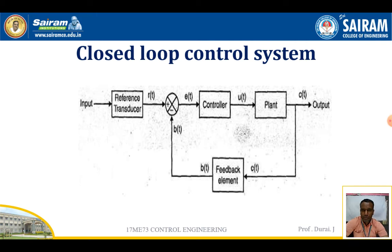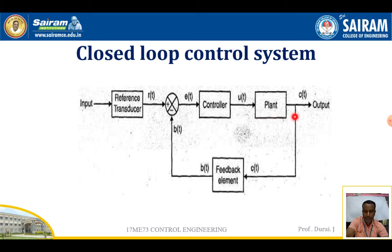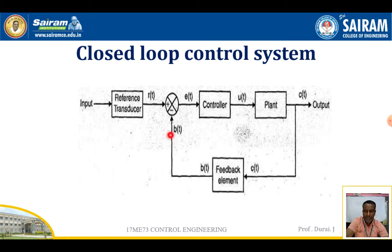Looking at the block diagram of the closed-loop system: first, the input signal generates the reference input, and it passes through the control element to provide the output signal as a controlled output, C(t). Then C(t) goes to the feedback element, and the feedback element provides the error signal or feedback signal back to the reference input system.